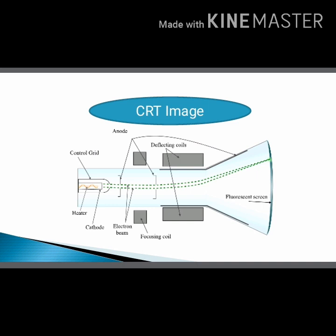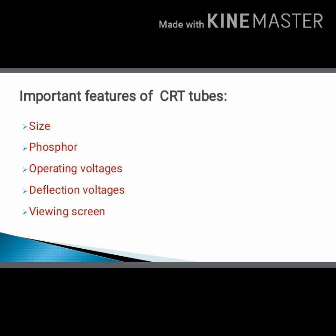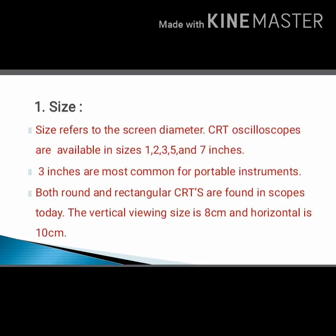There are also deflecting coils and a fluorescent screen which is coated by phosphor material. These are the main features of CRT. The first feature is size, the second one is phosphor coated on the fluorescent screen, the third one is operating voltage, the fourth one is deflecting voltage — these two voltages help to inject electrons onto the fluorescent screen — and the last one is viewing screen.